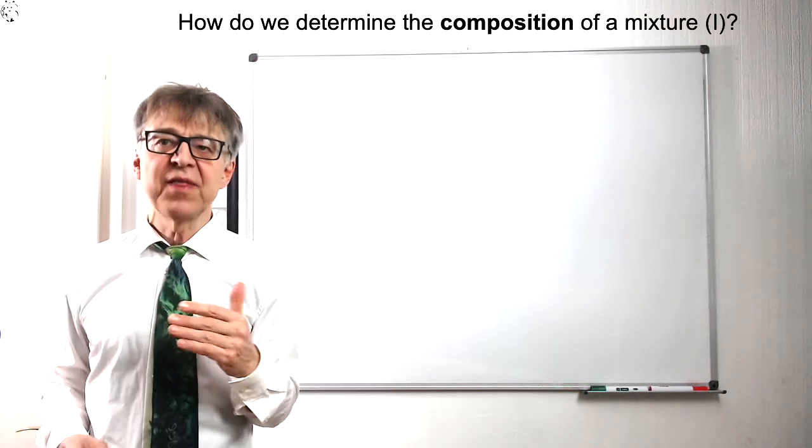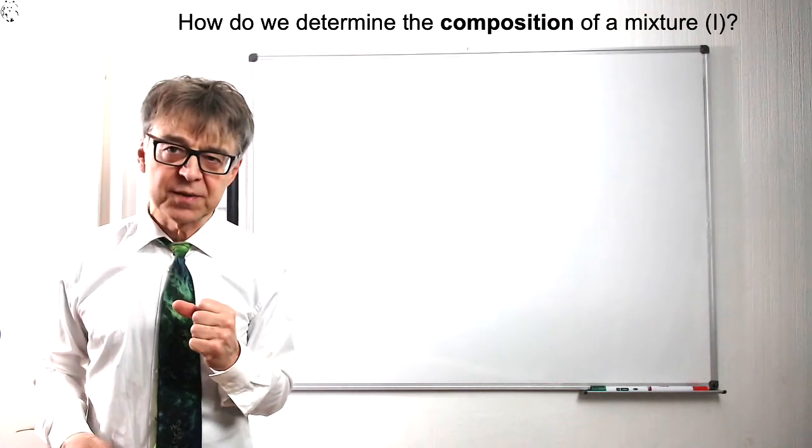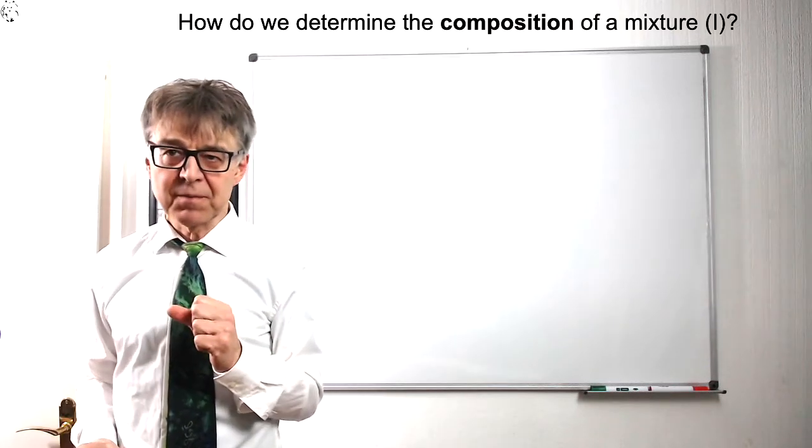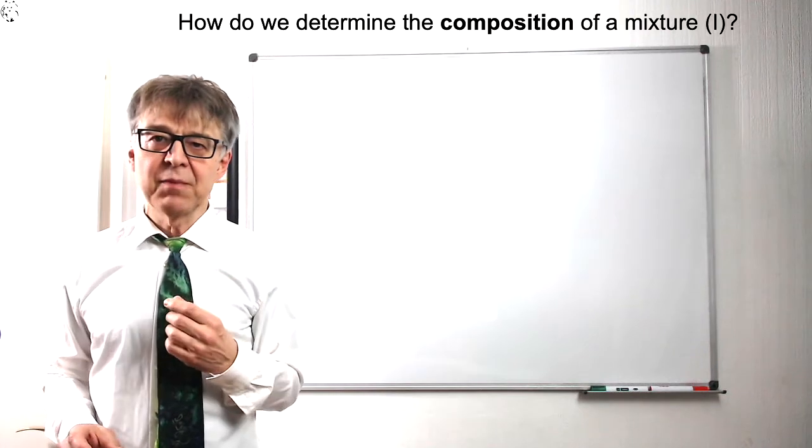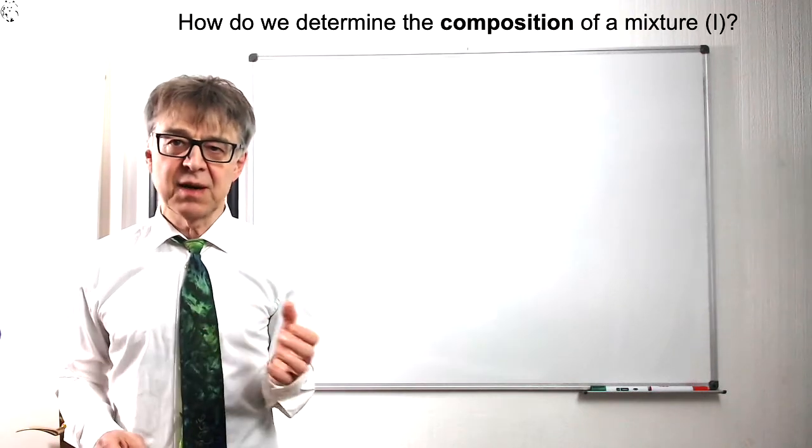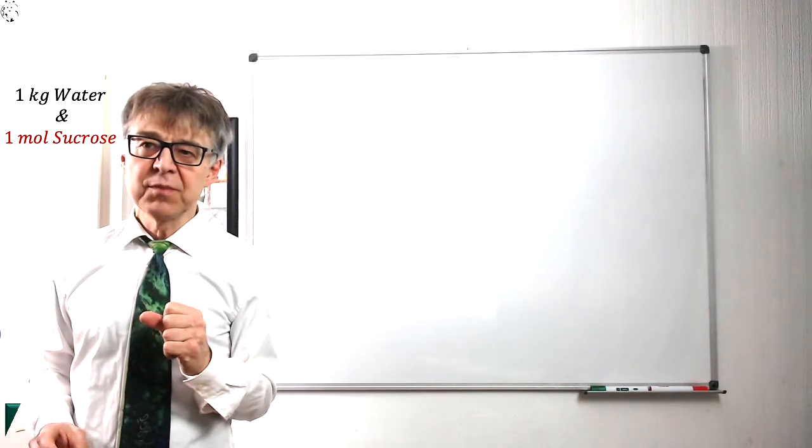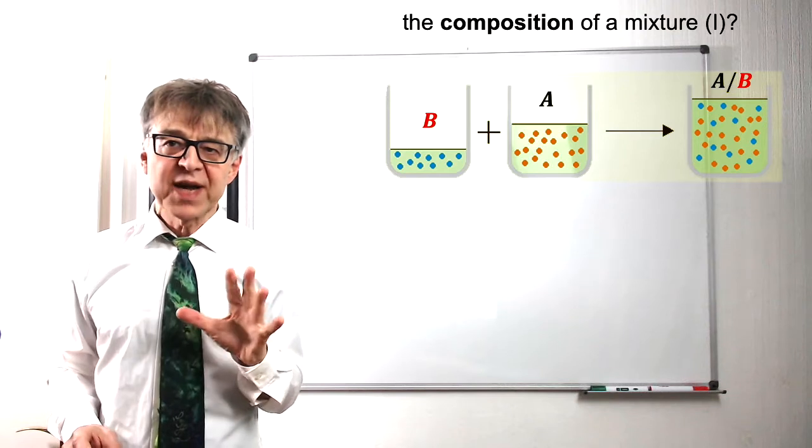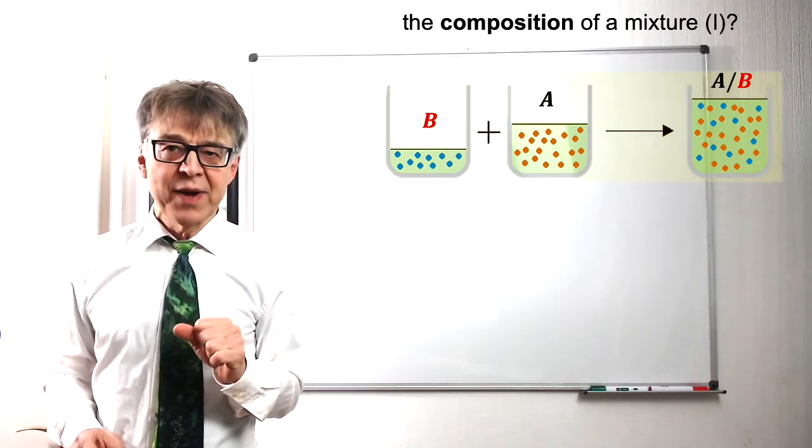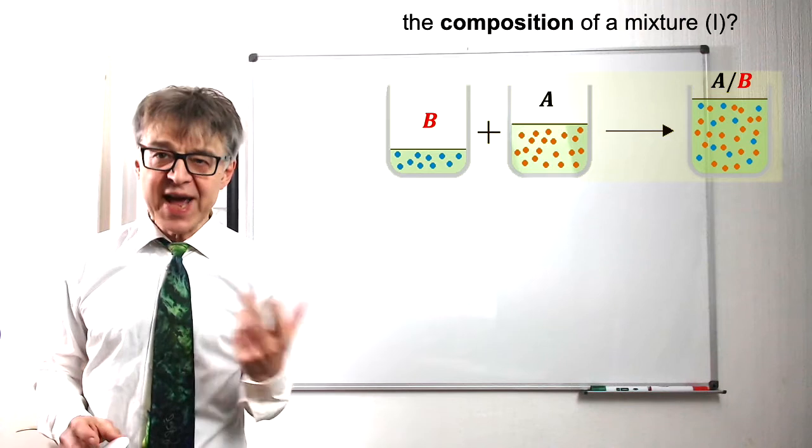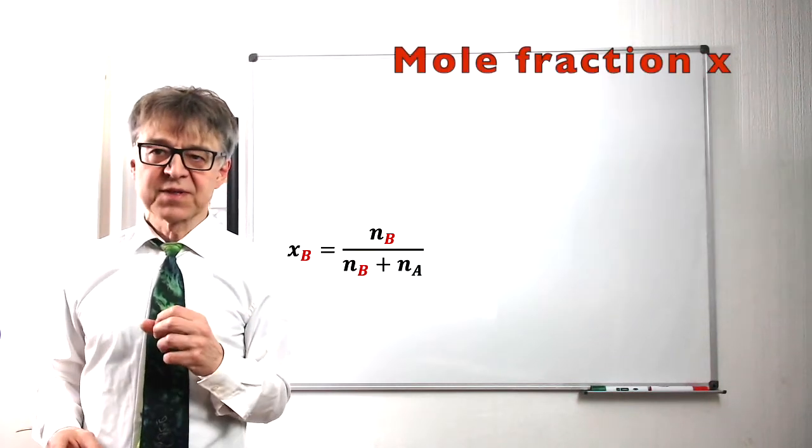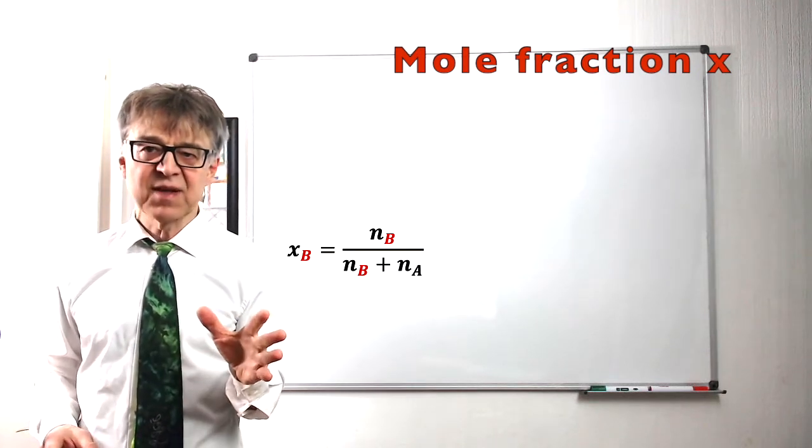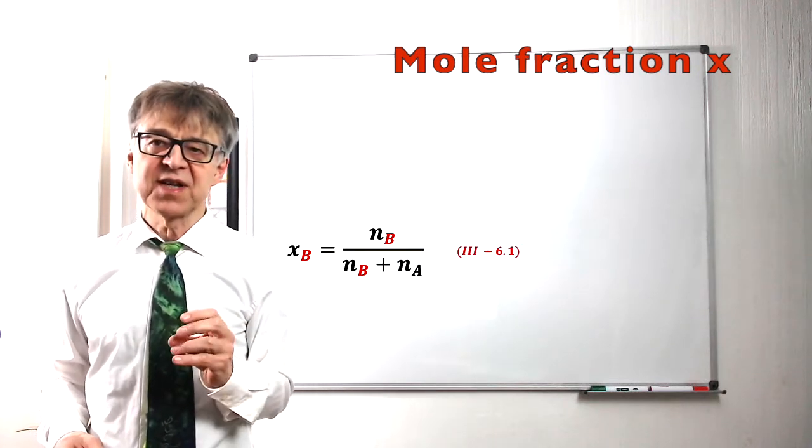What happens when we dissolve another component in solvent water? First of all, we have to clearly describe the composition of the mixture. If we take, for example, one kilogram water as solvent, abbreviated with A, and one mole of sugar as solute, abbreviated with B, we will get a homogeneous mixture AB. We may calculate the mole fraction x of this mixture—the amount of substance of the solute divided by the total amount of substance. In our case, that would be 1.8 mole percent sugar.